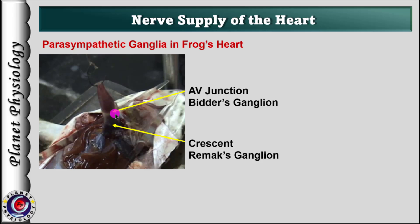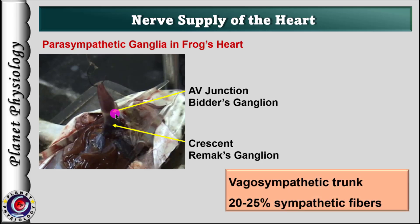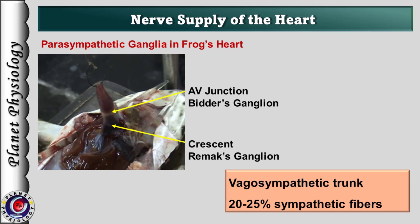Another specialty in frog is that postganglionic sympathetic fibers travel alongside the vagus nerve. Thus, the vagus nerve contains about 20-25% of the sympathetic fibers. Hence, it is referred to as the vagosympathetic trunk. With this background knowledge, let's see the setup for this experiment.